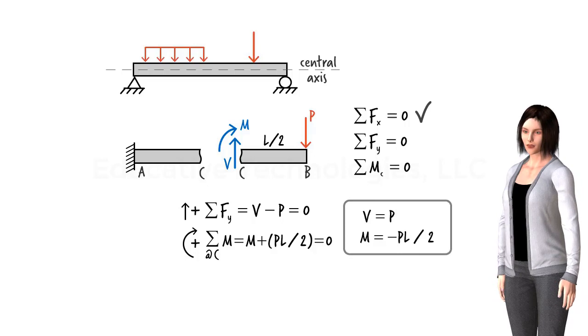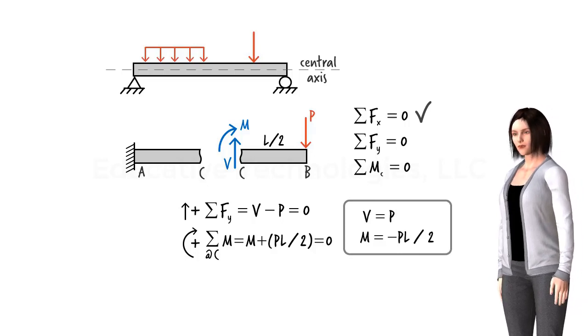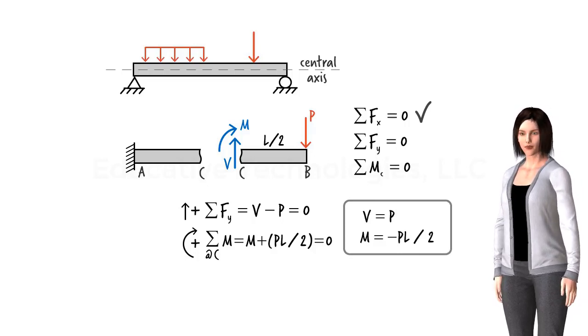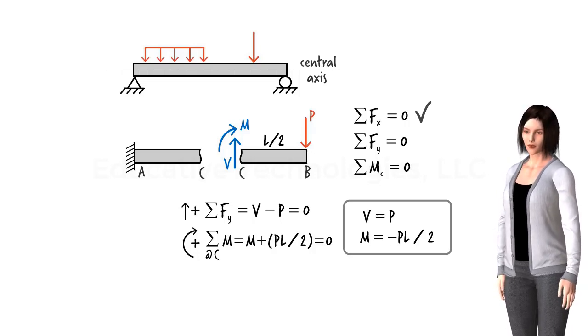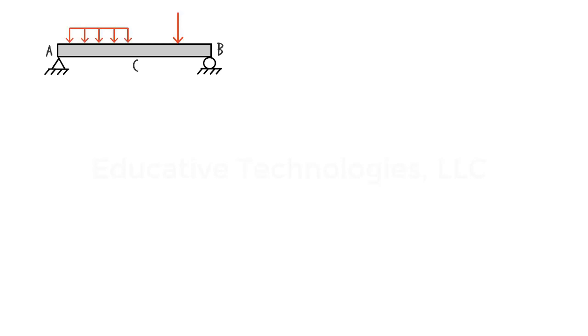Generally speaking, these forces do not remain constant in the beam. Their values may need to be determined at critical locations throughout the beam. In order to calculate the shear force and bending moment at a point, it is necessary to conceptually cut the beam at that point and draw the free body diagram for each beam segment. Any time we cut a beam, we need to show the beam's internal forces at the cut point.